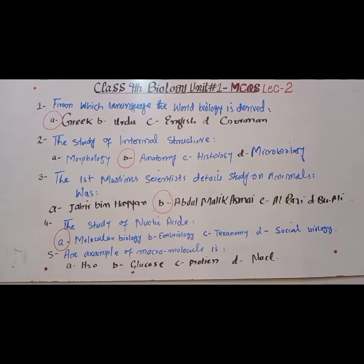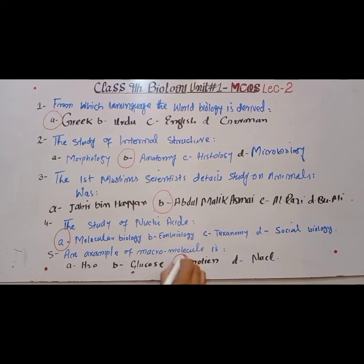MCQ number five: An example of a macromolecule is dash. Molecules are of two types: macromolecules and micromolecules. Macromolecules have high molecular weight and require a large amount. Micromolecules have low molecular weight. An example of a macromolecule is protein.